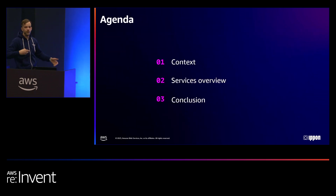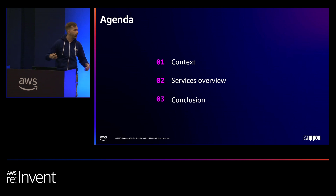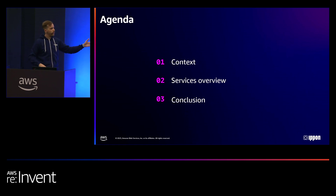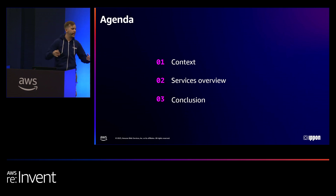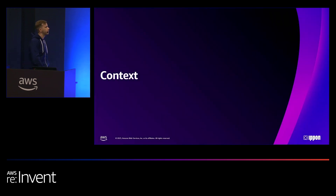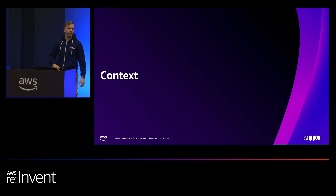Now that you know a bit more about myself, we are going to go through the agenda together. We are going to first start with a bit of context because I have to do it. Then we'll dig into the services overview that I've chosen for my architecture, and then obviously we're going to conclude together. Let's dig a bit more about this context.